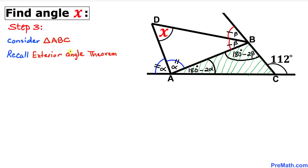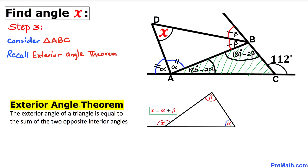Here's our next step. Let's focus on triangle ABC and recall the exterior angle theorem. The exterior angle of a triangle is equal to the sum of the two opposite interior angles. In this case, we have X as an exterior angle, and this is equal to the sum of these two opposite interior angles, alpha and beta.